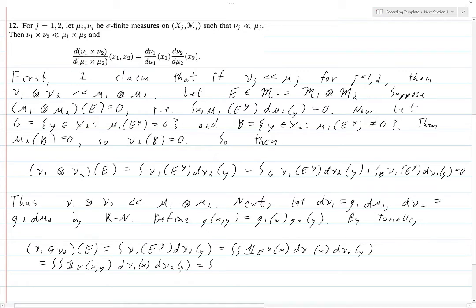Then this is equal to, if we replace the ν's with the μ's: indicator of E(x,y) g_1(x) dμ_1(x) g_2(y) dμ_2(y). I'm definitely not going to fit this on here, so this is equal to